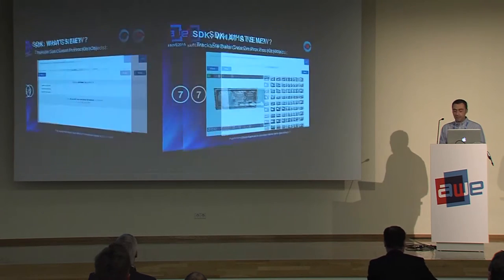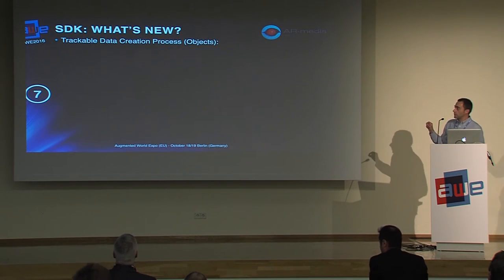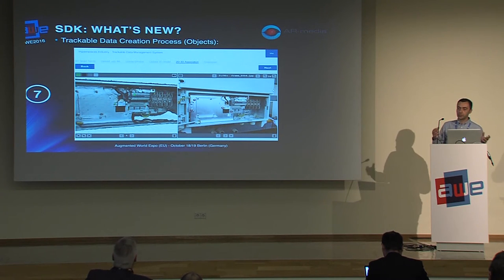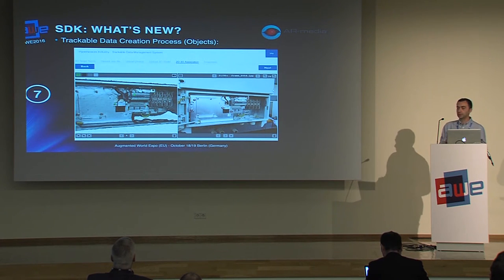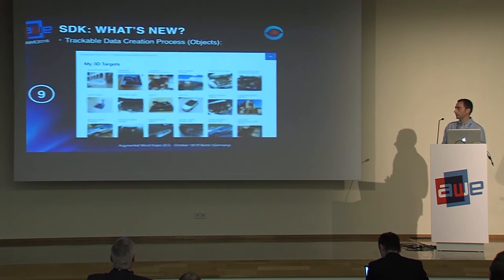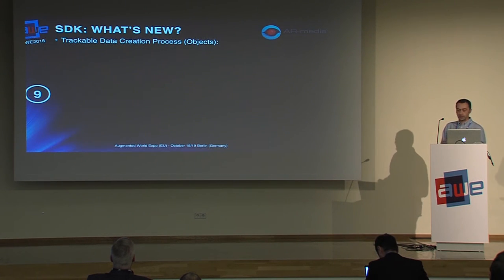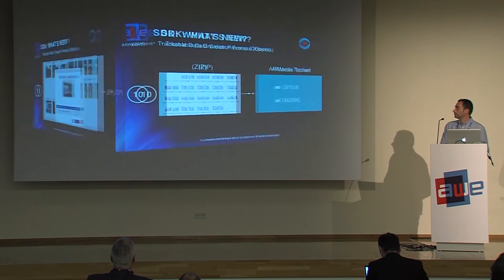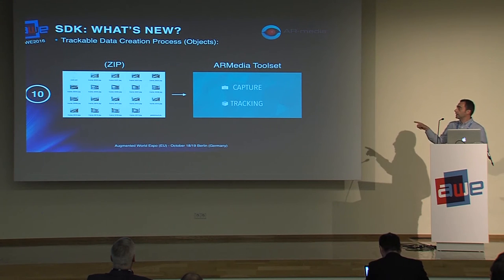The next step is to make correspondences between the 3D model you uploaded and a couple of pictures taken with the toolset application. This lets you set the working scale and orientation of the augmentation relative to the 3D model. Finally, you send everything to the queue, it gets processed on our cloud server, and after a few minutes you receive a zip file containing the tracking data, which you download and load into the AR Media Toolset application.